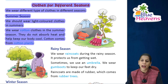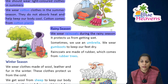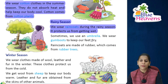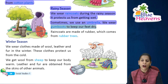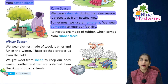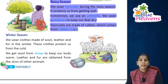In the rainy season, we wear raincoats which protect us from getting wet. Sometimes we use an umbrella. We wear gum boots to keep our feet dry — gum boots prevent water from reaching our feet. Raincoats are made of rubber, which comes from rubber trees.